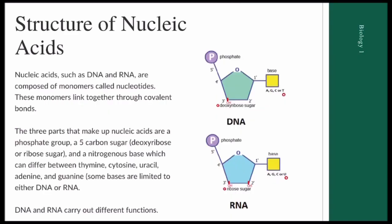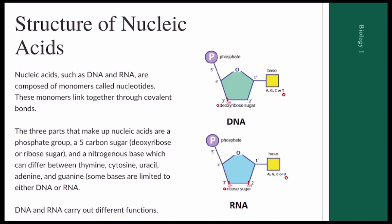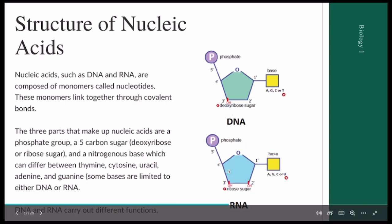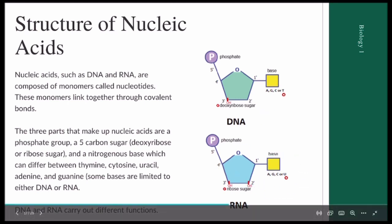This is section 1.4, properties of biological macromolecules. The three major components of both DNA and RNA are a phosphate group, a 5-carbon sugar group, and a nitrogenous base. The 5-carbon sugar differs: DNA has deoxyribose sugar while RNA has ribose sugar. The nitrogenous base also differs: in DNA it can be adenine, guanine, cytosine, or thymine, while in RNA it can be adenine, guanine, cytosine, or uracil.